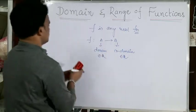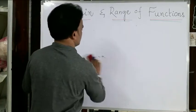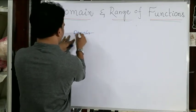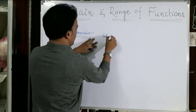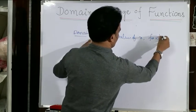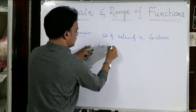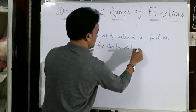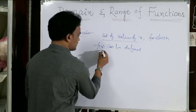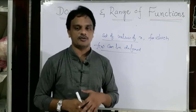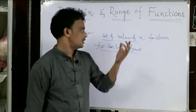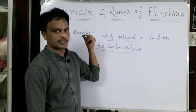Coming to our topic: what is domain of a function? The domain is the set of values of x for which the function f(x) can be defined. We are going to take a function and find for which values of x it can be defined — that set of values is called the domain of the function.